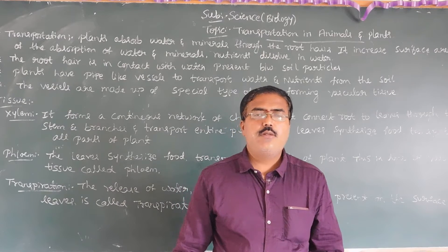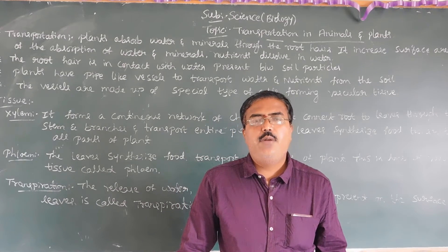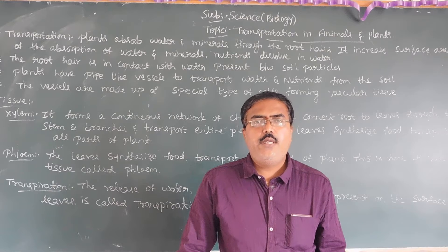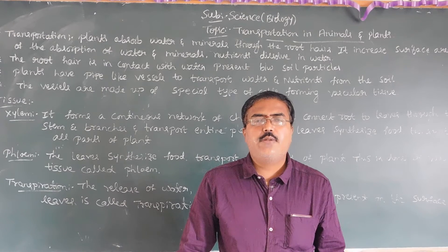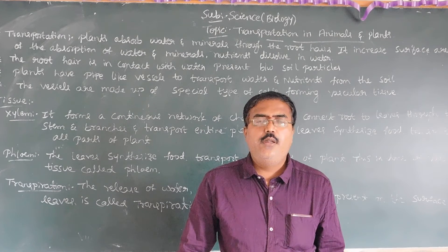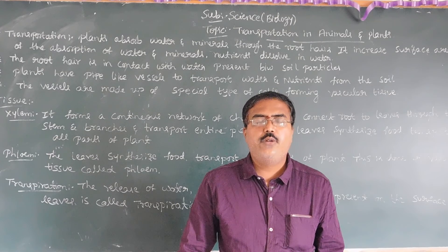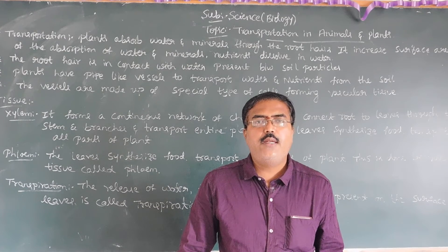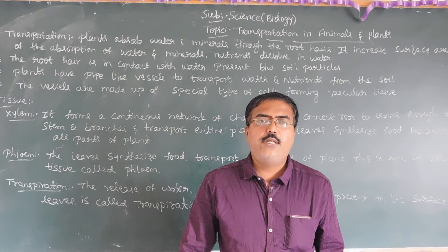Plants also have a transportation system because they can absorb water and minerals from the root, and pass them to all other parts of the plant body. Not only water but also other nutrients — micro nutrients and macro nutrients. Similarly, from the soil, elements like iron, molybdenum, phosphorus, and potassium are present.